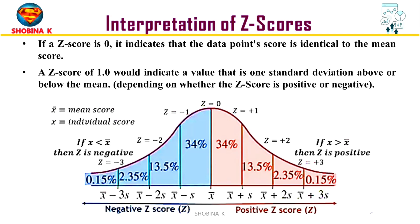A z-score of 1.0 signifies a value that is one standard deviation above or below the mean, depending on whether the z-score is positive or negative. This provides a standardized measure of how far a data point is from the mean.